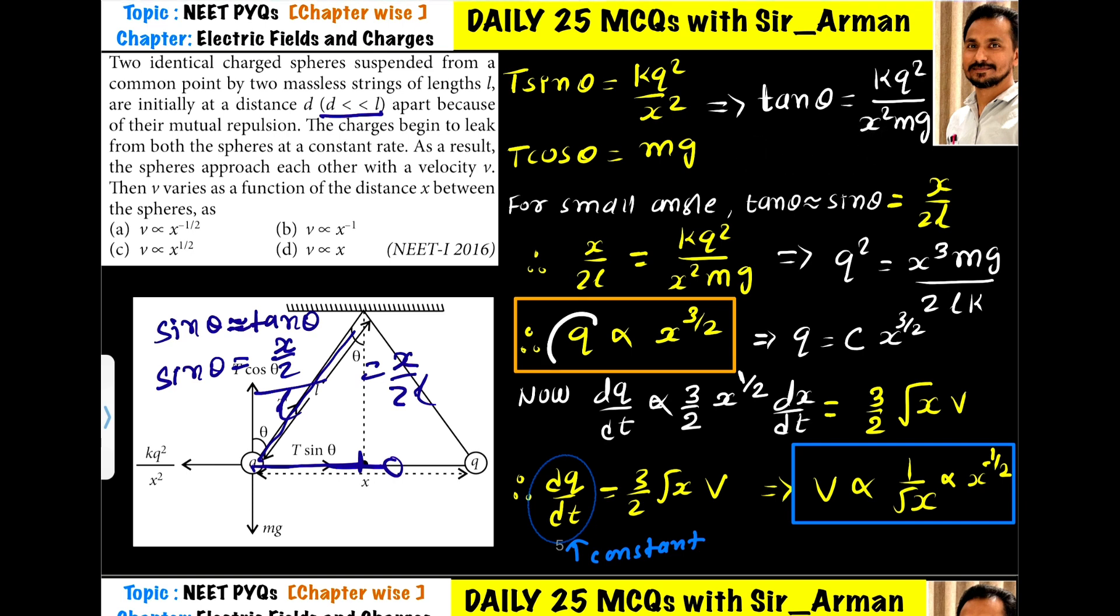Instead of a proportionality, q is proportional to x^(3/2), we multiply by a constant C to remove the proportionality sign. So q = C·x^(3/2). Now, differentiating q = C·x^(3/2), the constant C remains as is.